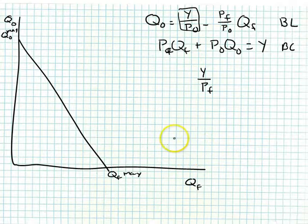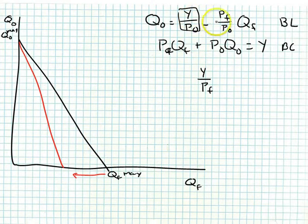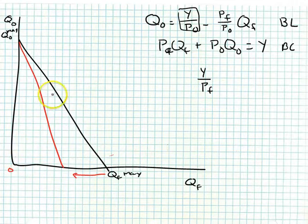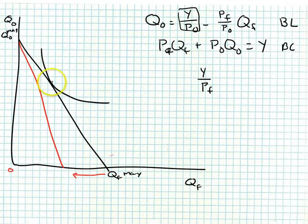Thus far we have been looking at price changes — let's start with an increase in price, which would make the budget constraint or budget line move inward. As PF increases, Y over PF or the x-intercept rotates in towards the origin. Remember that the y-intercept does not change when PF changes, as it is Y over PO and PF isn't even part of that equation.